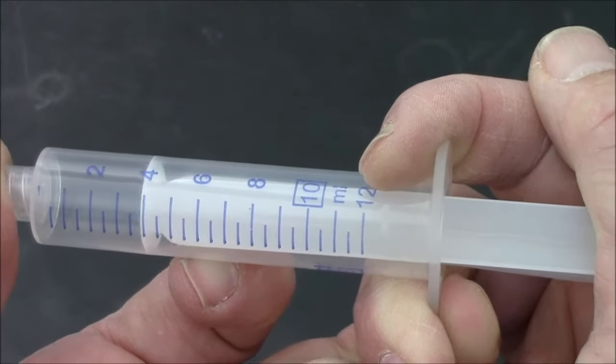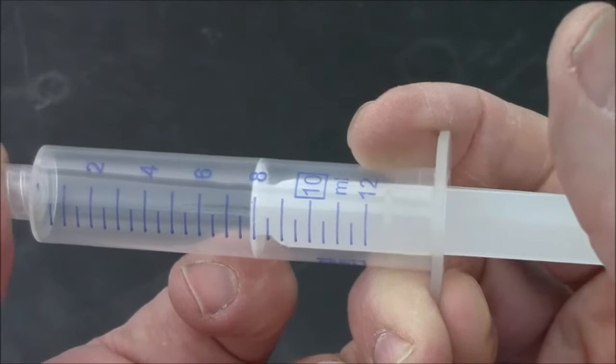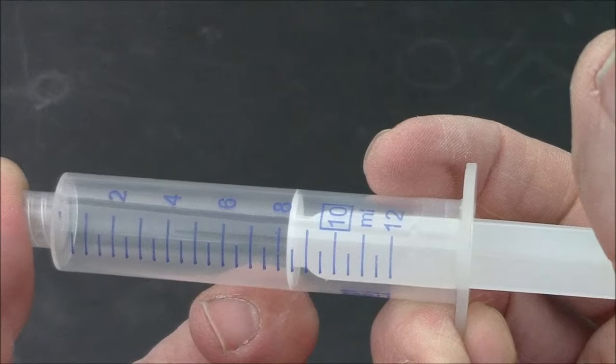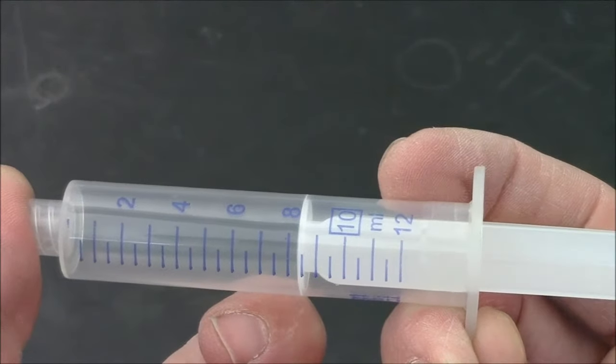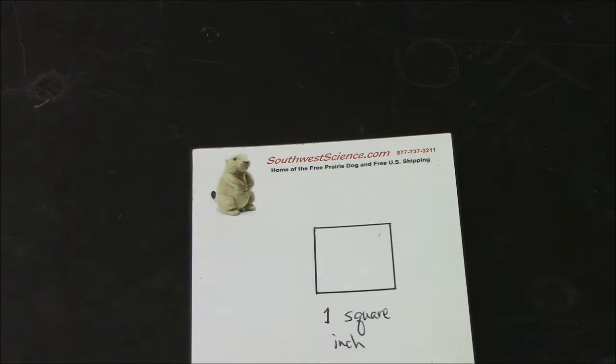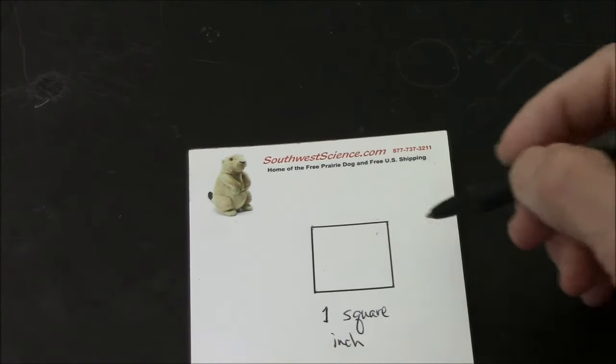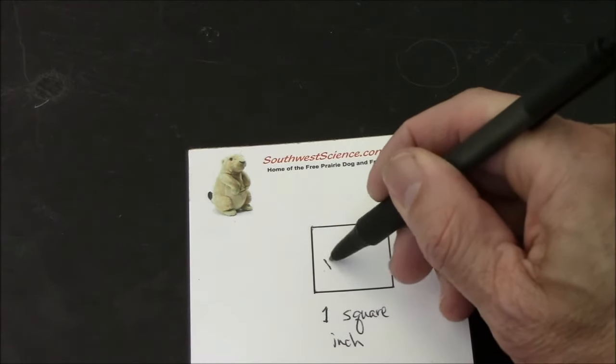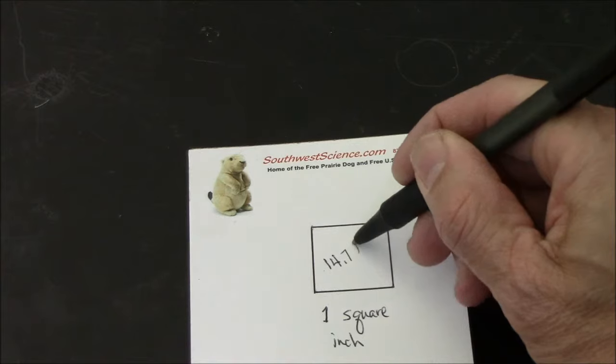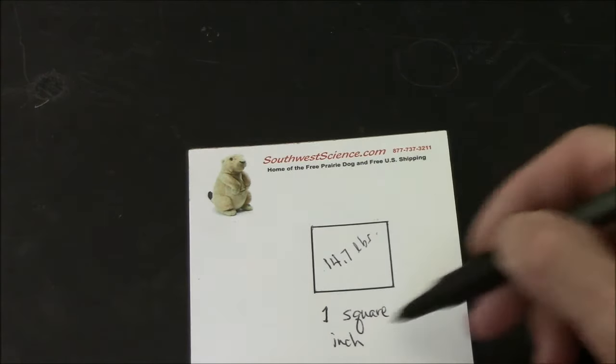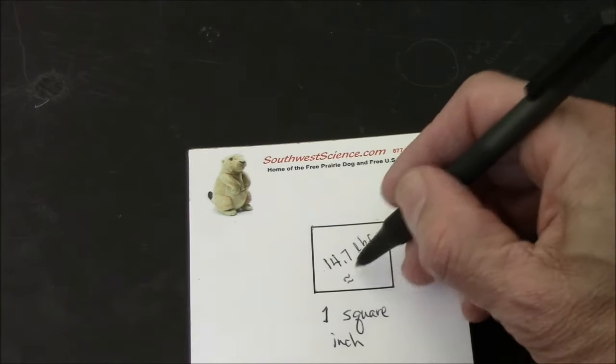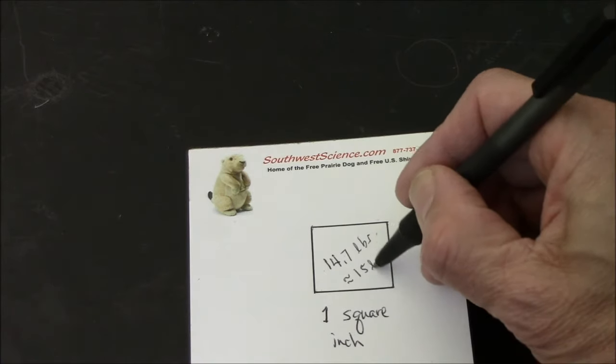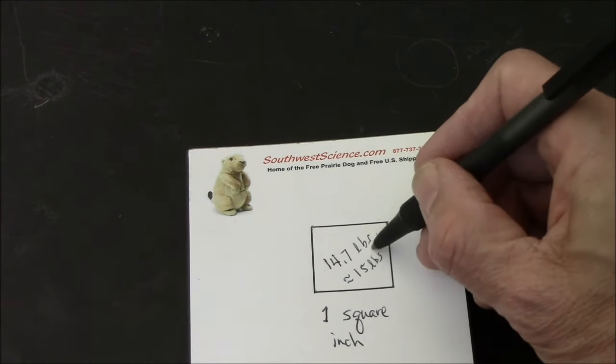Now I'm compressing it even farther down to about four milliliters, which makes it three atmospheres, and this hurts my hand. It's very difficult. The air always wins. That's probably my maximum there and we're getting close to four atmospheres in the syringe. When I release it, you can see the air inside pushes the plunger back out.